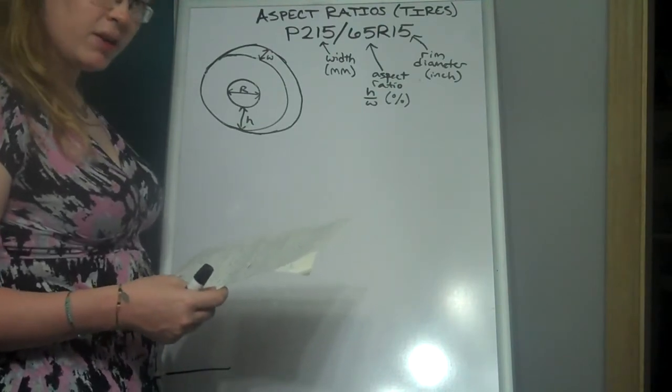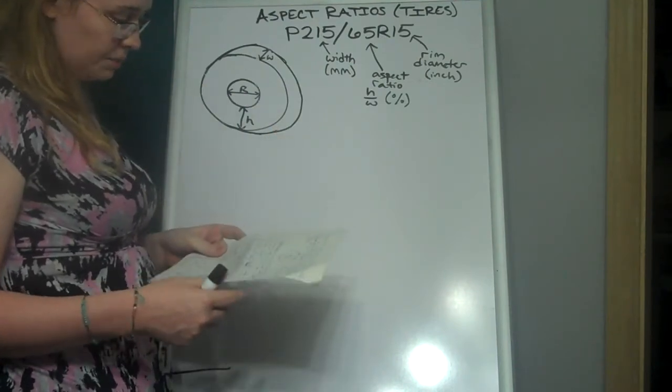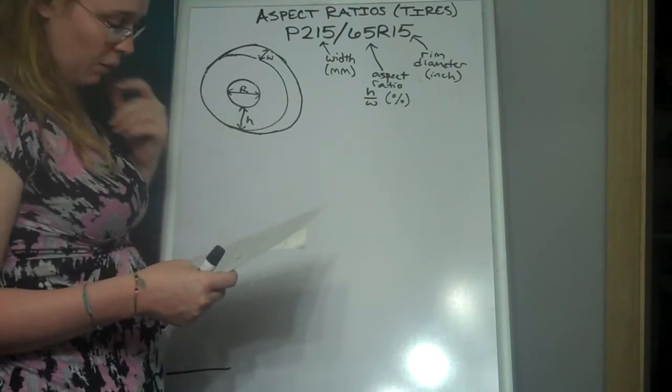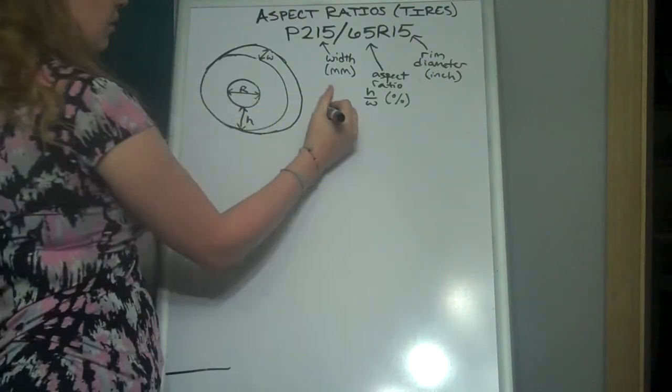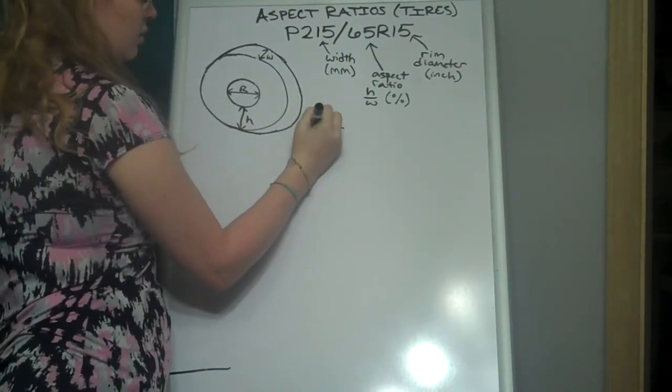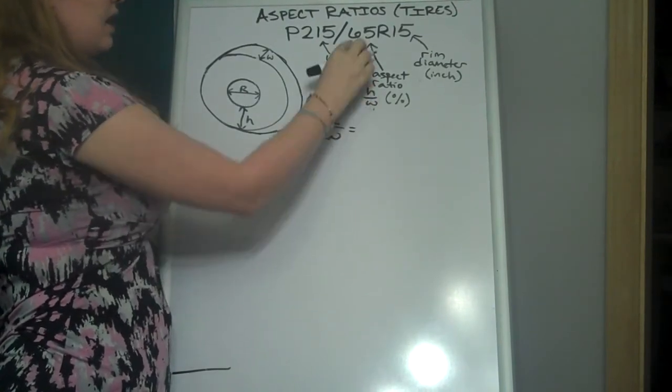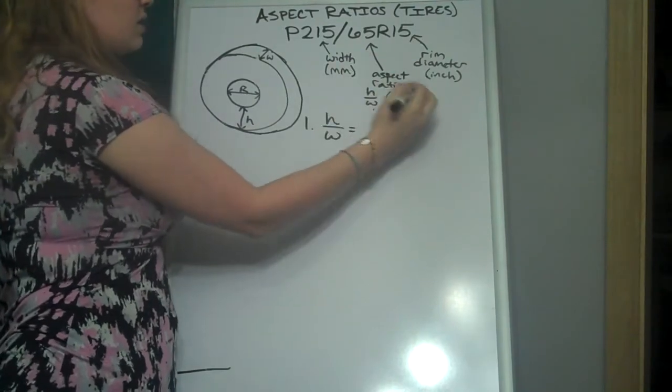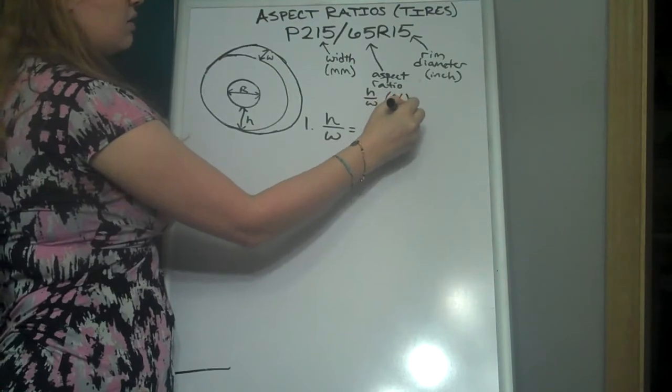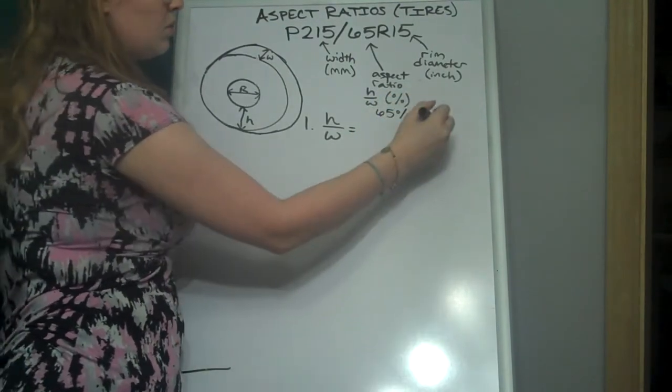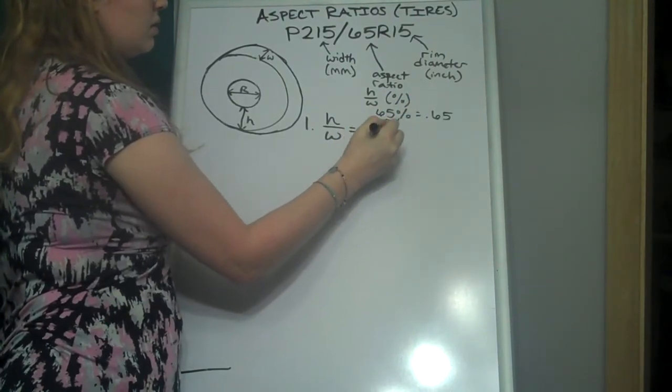So the good news is this can be very clearly broken down into four straightforward steps. First, we need to find the height. We have the width, but not the height. But since we have the aspect ratio, we can find it. So step one, height over width equals, and this is the aspect ratio as a percent. So 65%. How do you convert that to a decimal? You just move the decimal point two places over. Equals 0.65.